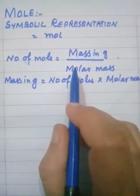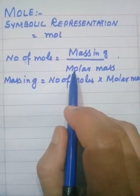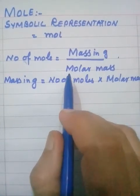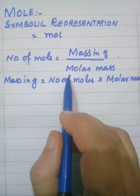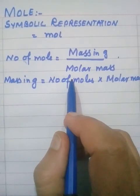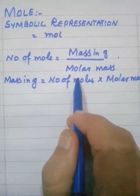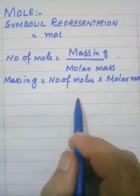By definition, mole is the amount of a substance which equals the atomic mass of an atom, the molecular mass of a molecule, or the formula mass of a formula unit, expressed in grams.